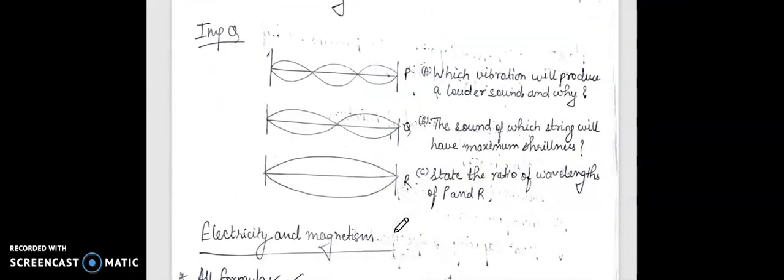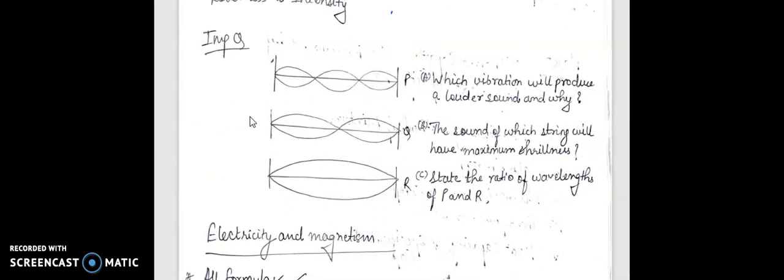Now I will move to a very important question. I would suggest you to go through previous year questions and solve them. These are three different modes of vibrations P, Q, and R of the same string. Question number one: which vibration will produce a louder sound? In this case, R will produce the louder sound because its amplitude is the largest. In this graph, you can see the amplitude, the maximum displacement.